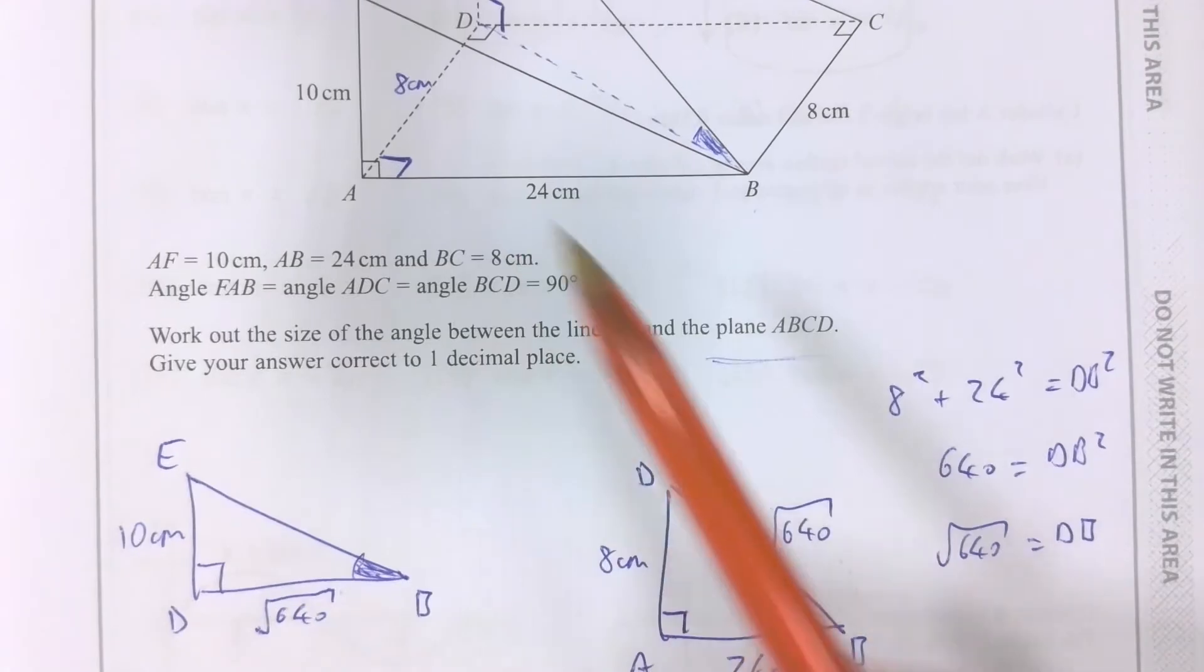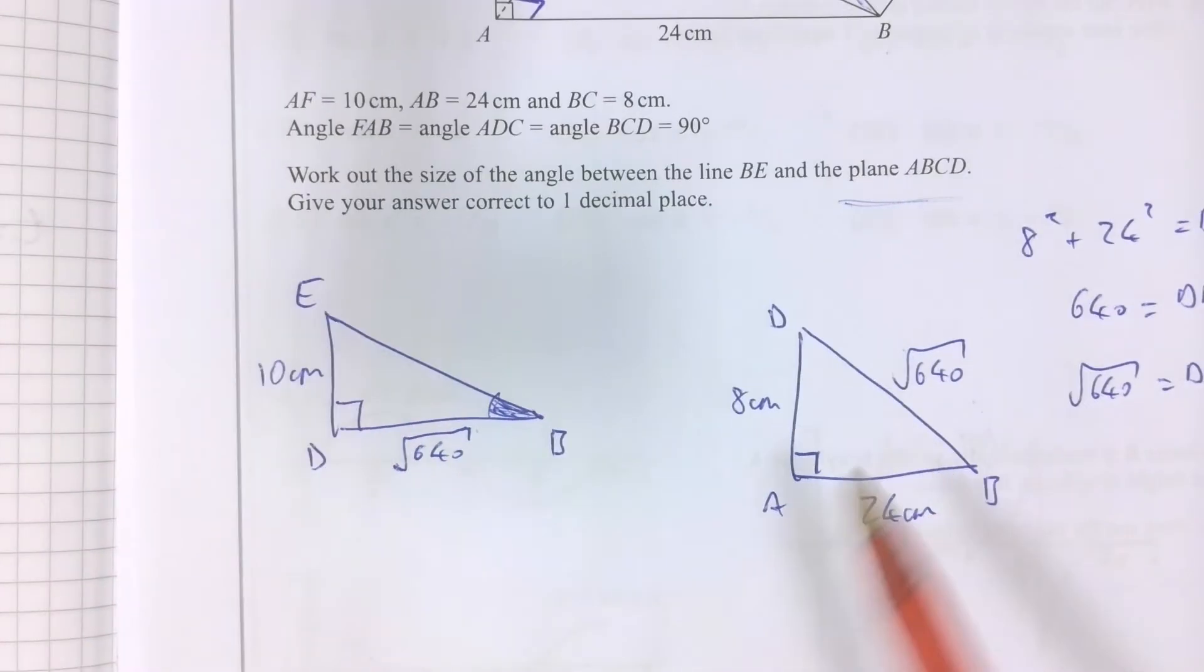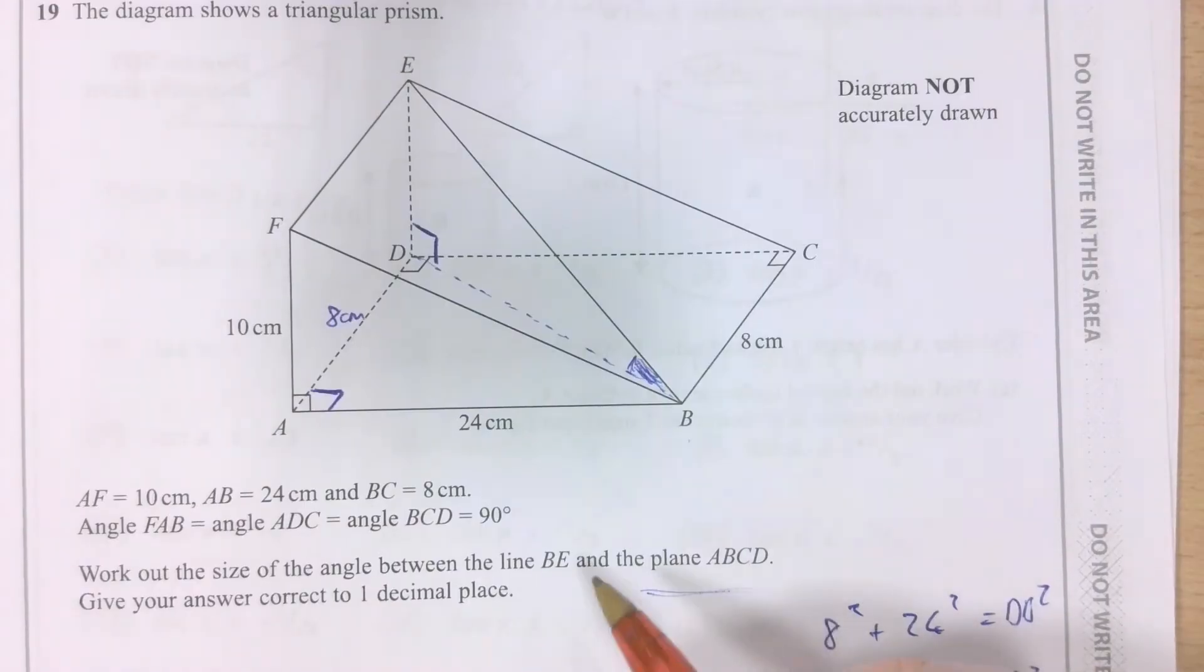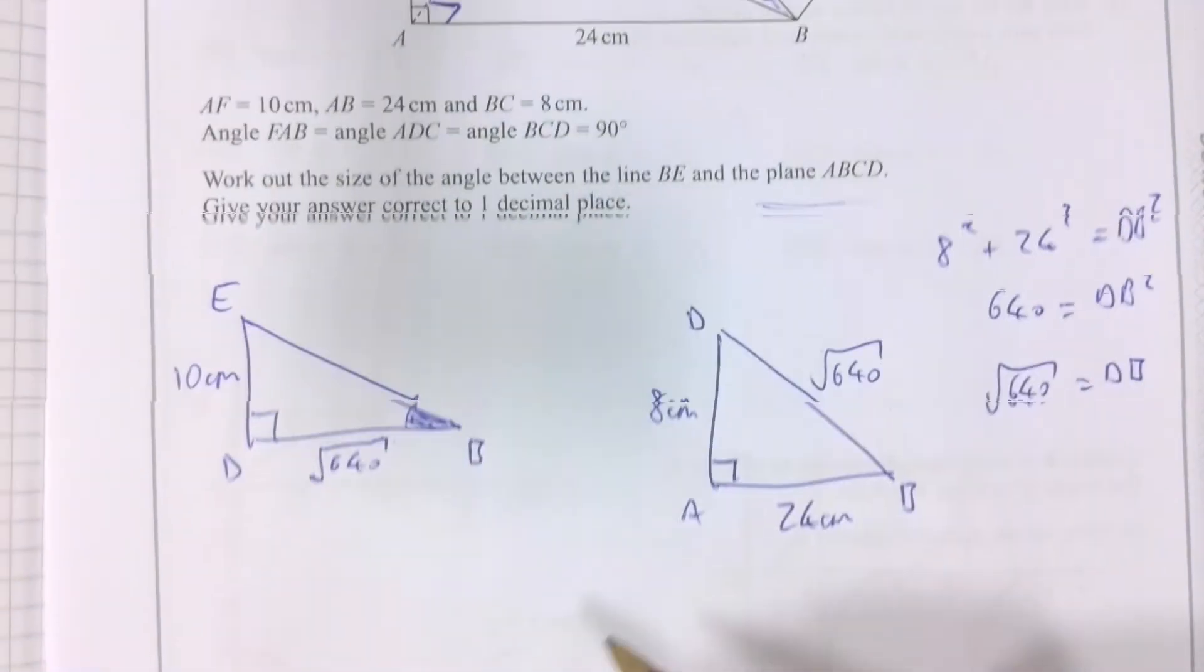Working out what that length DB is by using Pythagoras theorem. Now, working out this angle, which, remember, is the angle that we're looking for. It is actually what the question is asking.